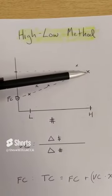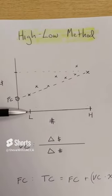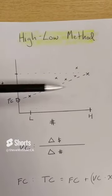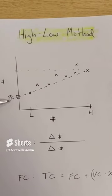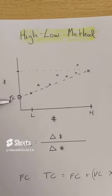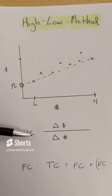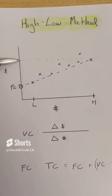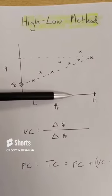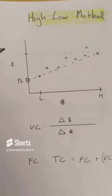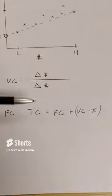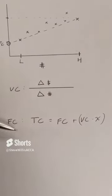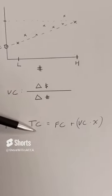I find the high activity, the low activity, ignore everything in the middle, and then I assume a perfect linear relationship between the two. The variable cost would be the change in costs divided by the change in units — our estimated variable costs. Once we have the variable cost, we plug that into the total cost equation, and we can solve for the fixed cost. Let's go.